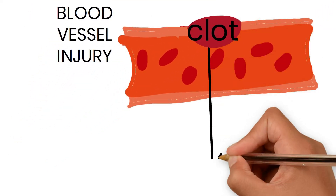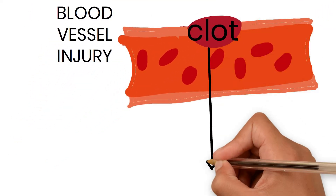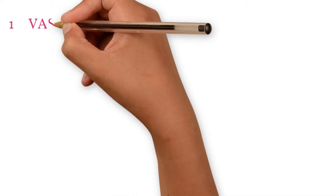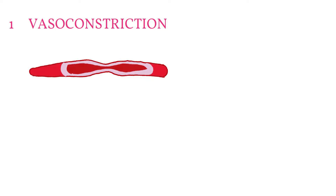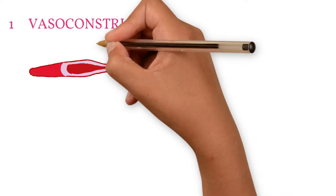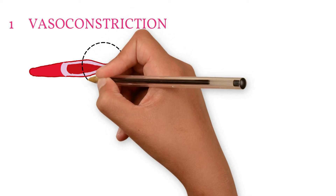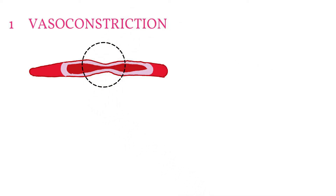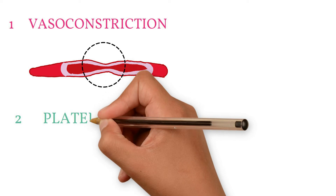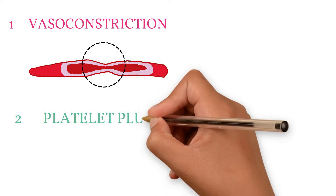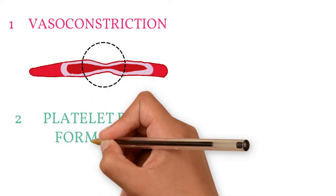When there is injury to a blood vessel, the first step in clot formation is arterial vasoconstriction — blood vessels contract at the site of injury to reduce blood flow, thereby reducing blood loss. However, this is only transient, so it is followed by formation of a platelet plug.